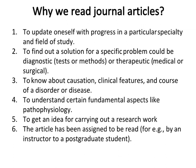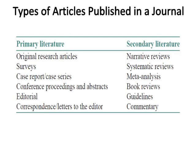Reason number four is to understand certain fundamental aspects like pathophysiology. Reason number five is to get an idea for carrying out research work. Reason number six is that the article has been assigned to be read, for example by an instructor to a postgraduate student. Types of articles published in a journal: in general, scientific literature can be primary or secondary. Reports of original research form the primary literature — the core of scientific publications.